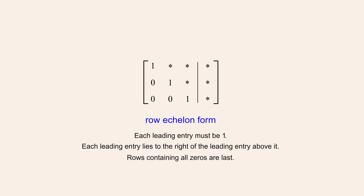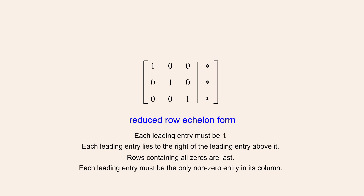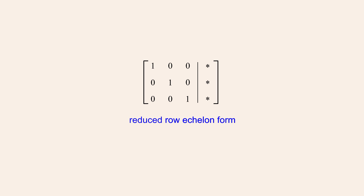Reduced row echelon form includes these same three requirements but also includes one additional requirement. In reduced row echelon form, each leading entry must be the only non-zero entry in its column. Therefore, if a column includes a leading entry, all the other entries in that column must be zero. In the matrix example shown here, since every column to the left of the vertical line contains a leading entry, all the coefficient entries must be either zeros or ones which fall on the main diagonal of the matrix.